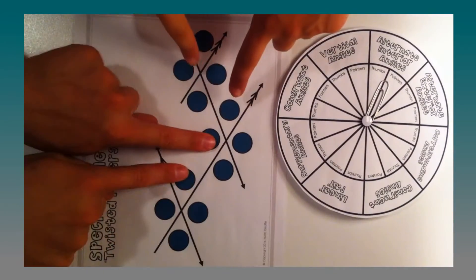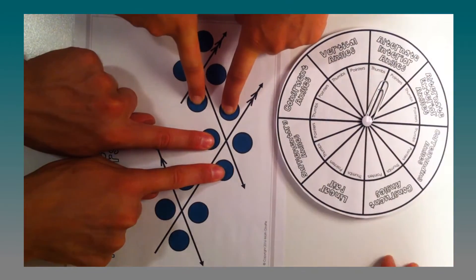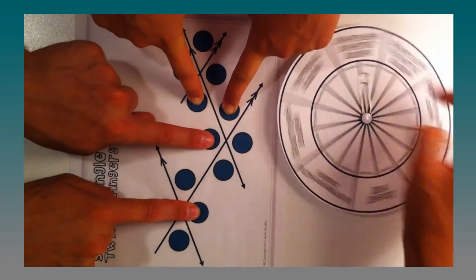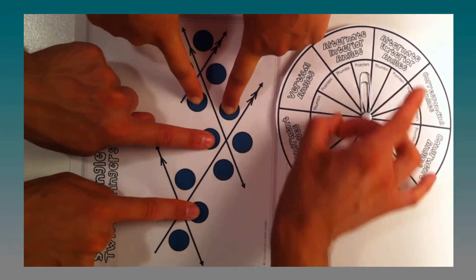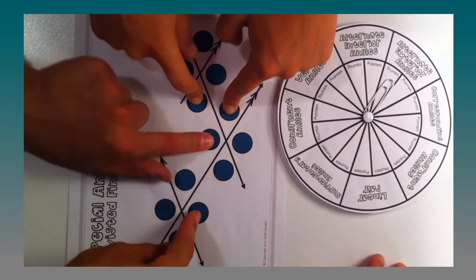So the spinner will spin and then the other two players have to look whether they're thumbs or pointer fingers go on that special angle pair. So here it says pointers on alternate interior angles. So they both have to find a pair each find a separate pair of alternate interior angles and you can't share a dot at any time.